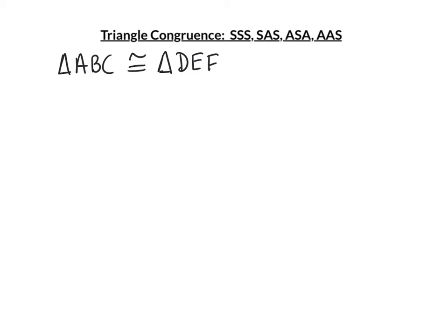When you say triangle ABC is congruent to triangle DEF, you're also saying that angle A is congruent to angle D because they're both first, angle B is congruent to angle E because they're both second, and angle C is congruent to angle F because they're both third. You must line up the congruent angles.